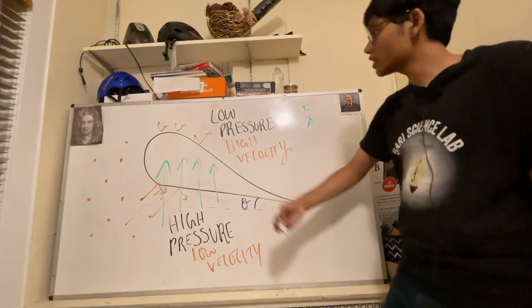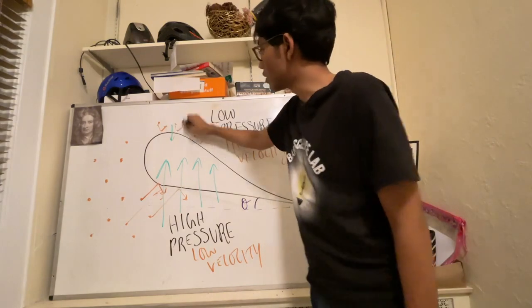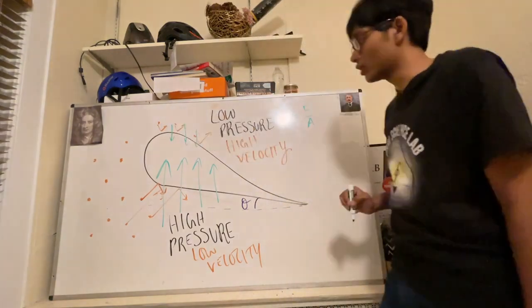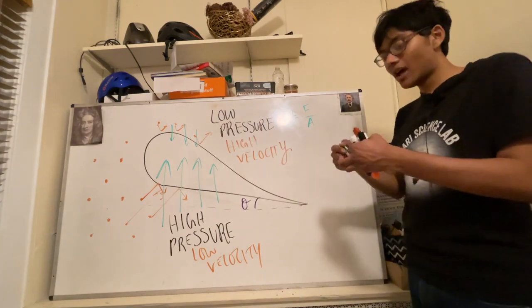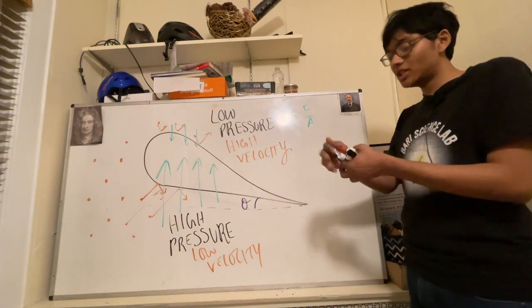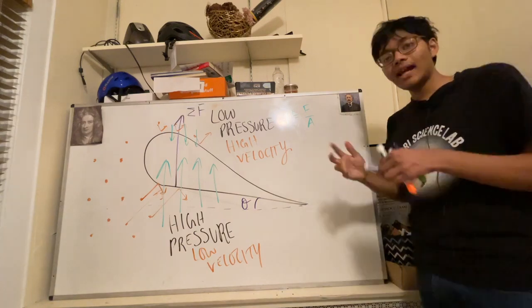On the other hand, a low pressure from the top means a smaller force from the top of the airfoil. The higher force from the bottom counteracts the smaller force on the top, and so you have a net force that generates lift for the airplane.